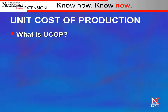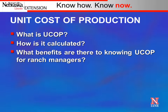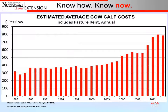So, unit cost production — what is it, how is it calculated, and what benefits are there to knowing unit cost production for a ranch manager? This graph shows nicely what's happened in terms of cow cost over the last 30 years. Back in 1985 we were around 300 to 400 dollars, then in the early 2000s costs started to ramp up. The last 10 years we've seen cow costs basically double from 2005, which is a significant increase to consider as we think about managing costs to improve profit.